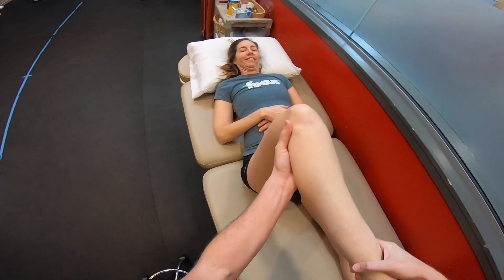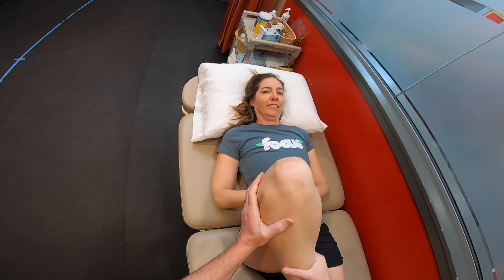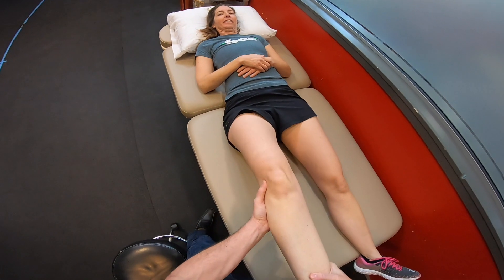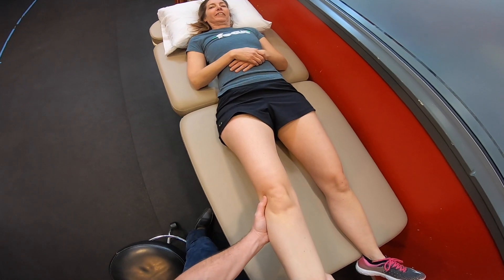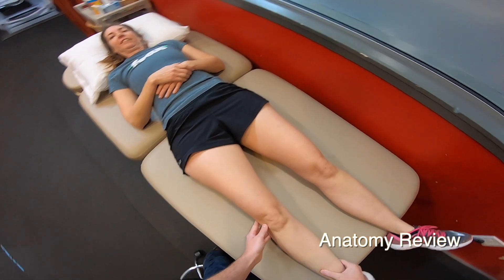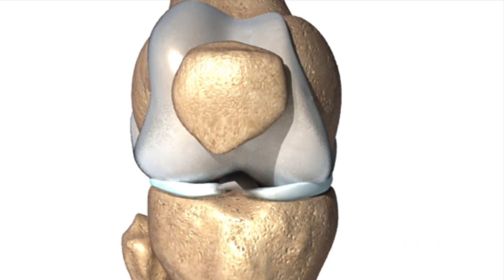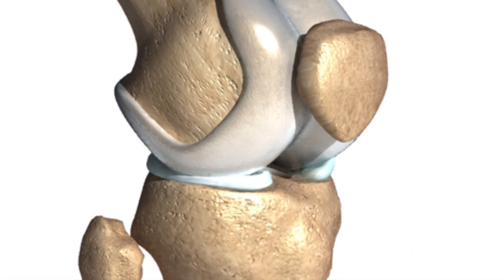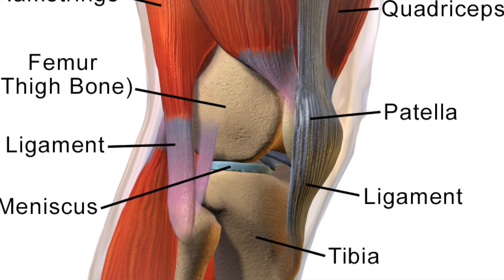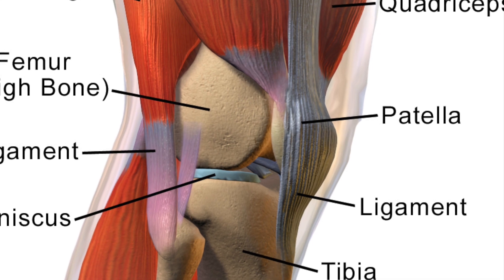So without further ado, here's how we diagnose eight of the most common types of knee pain, plus one extra, all in 10 minutes or less. First, let's review our anatomy. The four bones that make up the knee joint complex include the femur, the tibia, the fibula, and the patella. The muscles of the knee include the quadriceps, hamstrings, and calf muscles.